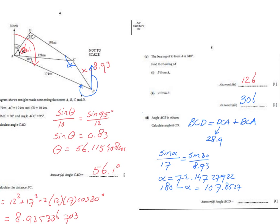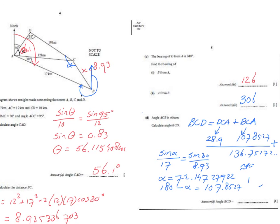Since they tell us angle ACB is obtuse, we take 180 minus 72.14 = 107.8527°. Adding the two parts together: 28.9 plus 107.8527 gives 136.75272, which to one decimal place is 136.8°. I hope that was useful — check my website explainingmaths.com for all my free resources, and like and share if it helped. Thank you very much, bye.